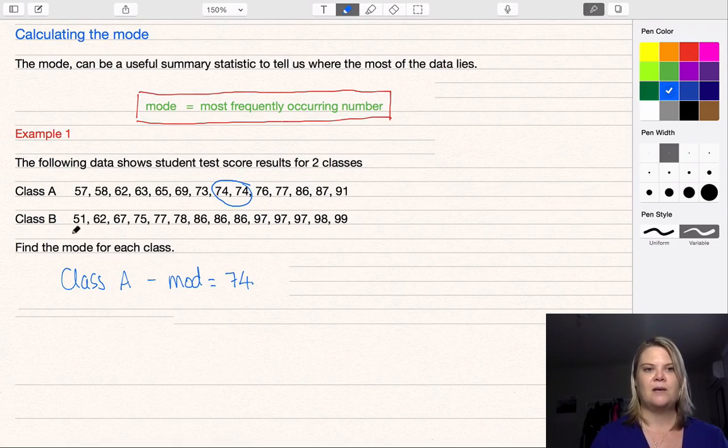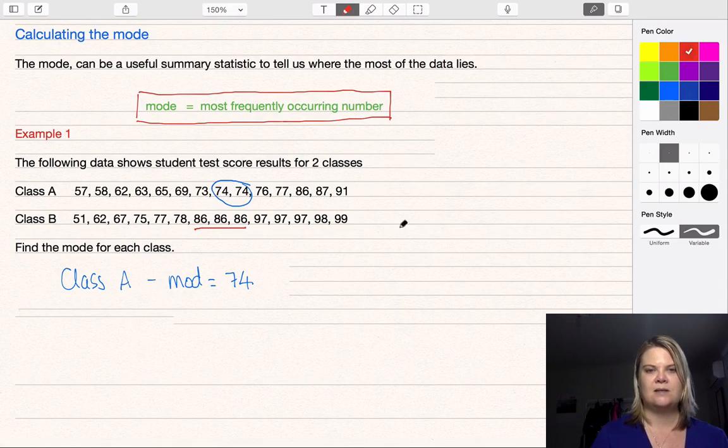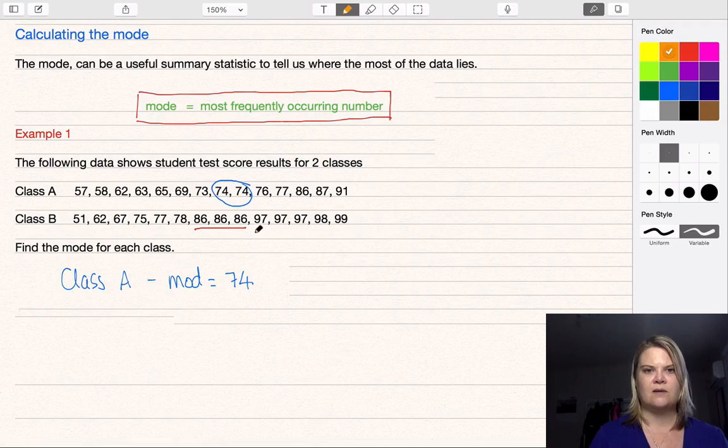For Class B we have 51, 62, no double ups yet, 86, 86, 86 so there's three of those, and then we have 97, 97, 97 so three 97's as well.